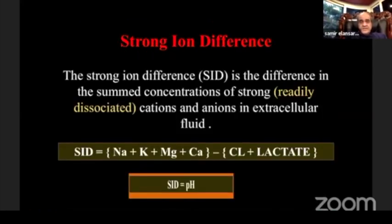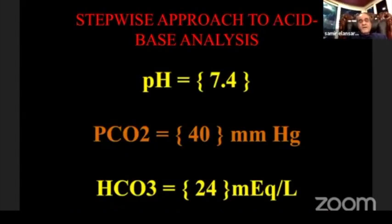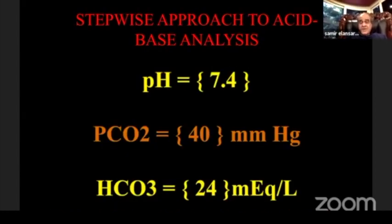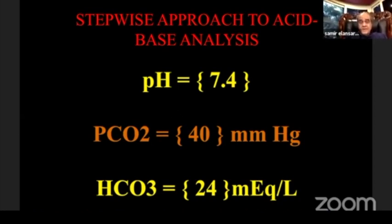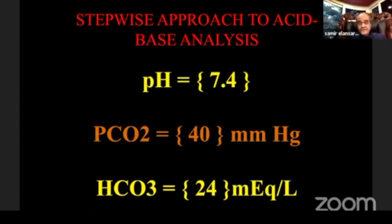Strong ion difference — Stewart depends on the strong ion difference, so if lactate increases, it will decrease the pH. The three important items in ABG are: pH, which is normally 7.4; carbon dioxide pressure, 40 mmHg; and bicarb, around 24 mEq/L. The body's internal environment is maintained at a normal pH of 7.4, maintaining the hydrogen ion concentration normal, which is about 40 nanoequivalents.